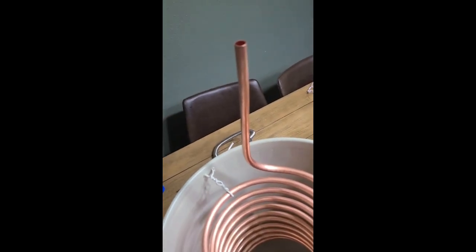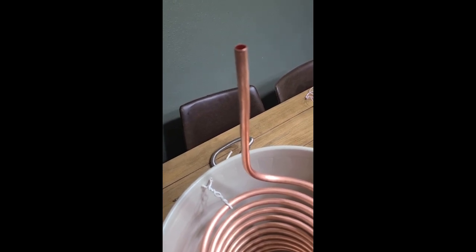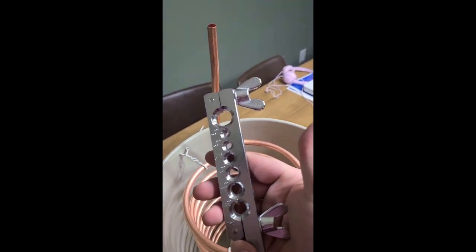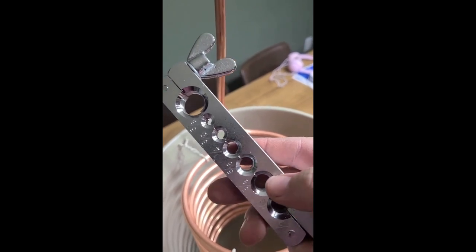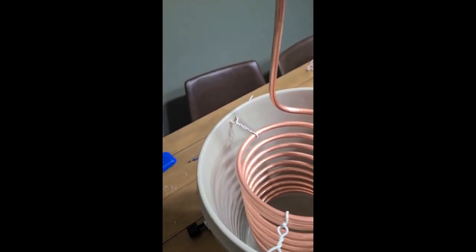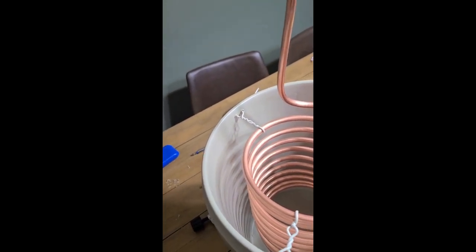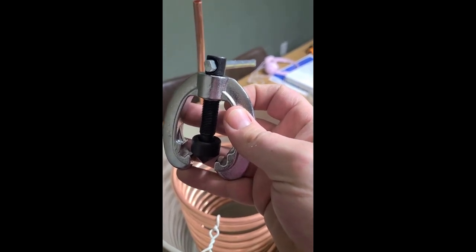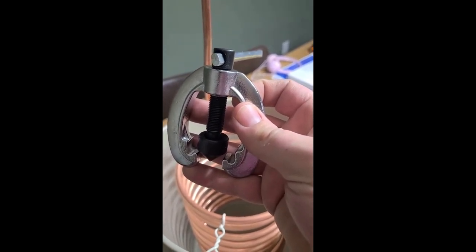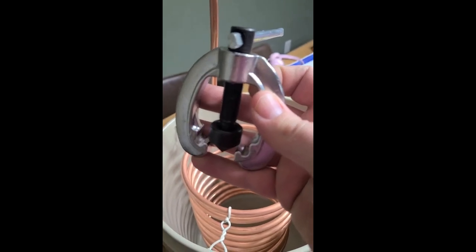Only thing we really have yet to do is to flare out the end of our pipe here. We'll be using the flare tool, it's three-eighths, so we'll just open it up and put it onto the three-eighths hole and tighten it down. We have the other piece of the flare tool that actually flares it out, but before we do that we have to cut off our fitting.